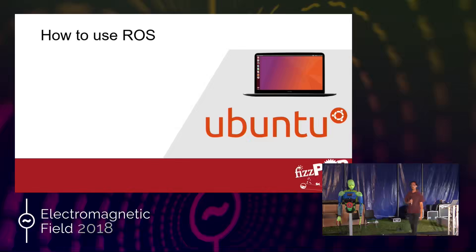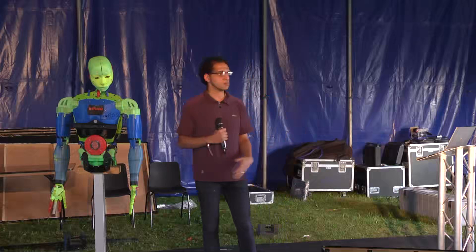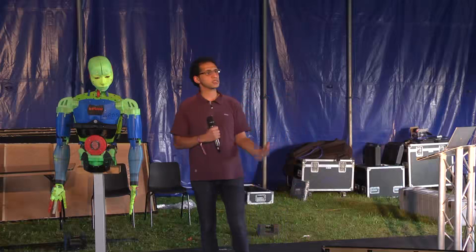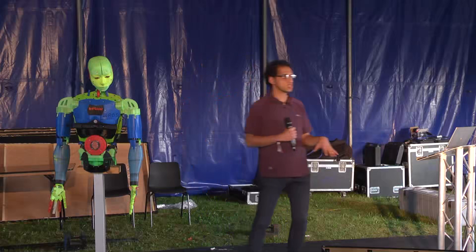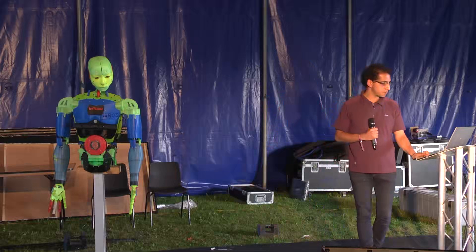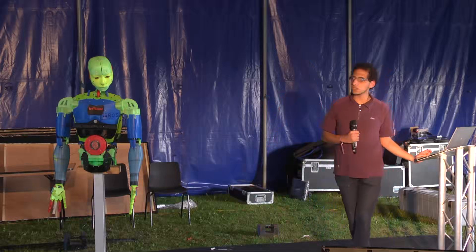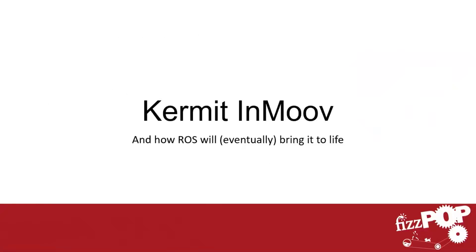You run ROS on top of a computer. It's called Robot Operating System, but it's not really an operating system in itself — you run it on top of another operating system, most ideally Ubuntu. And as I said, you can run it on any different kinds of robots, including any robot that you design yourself.